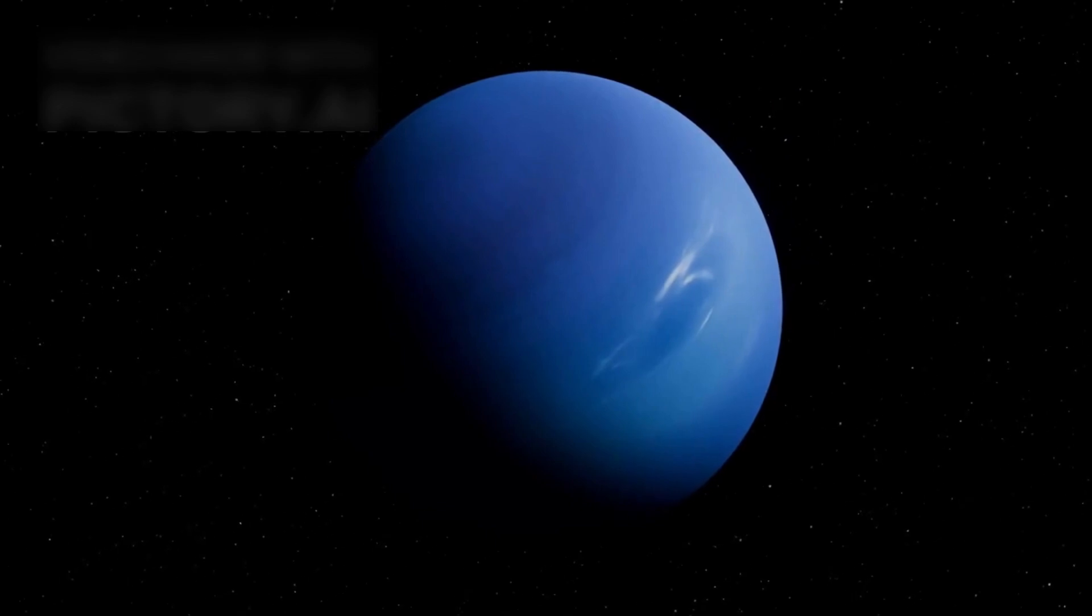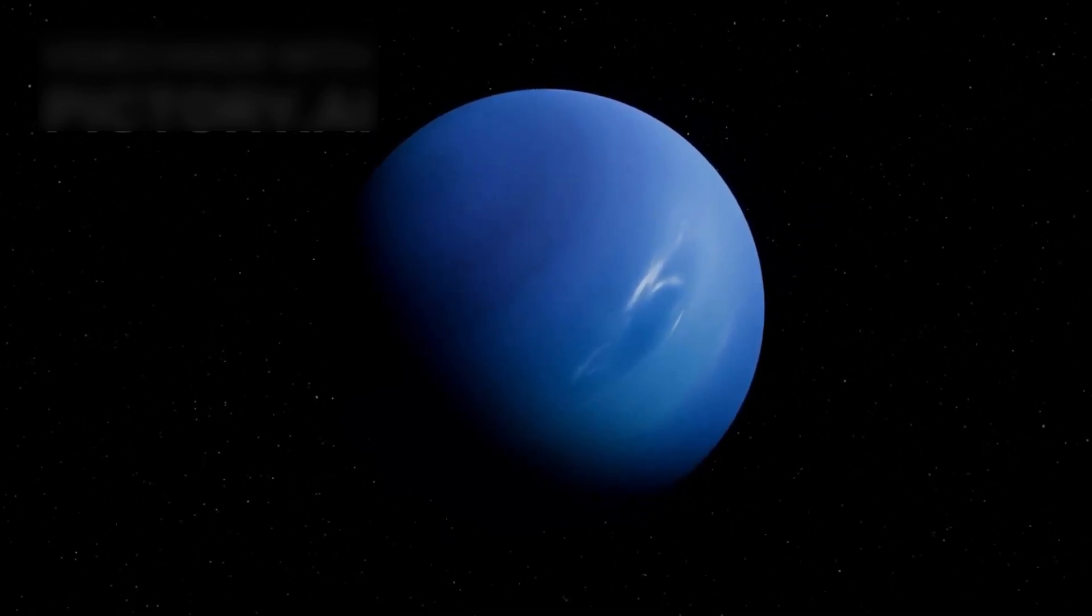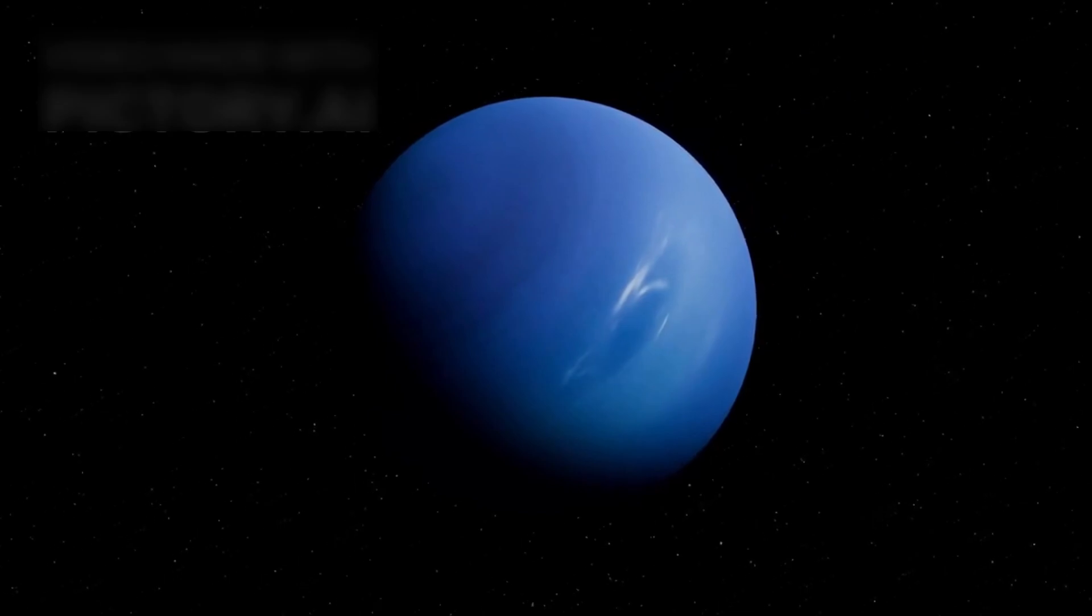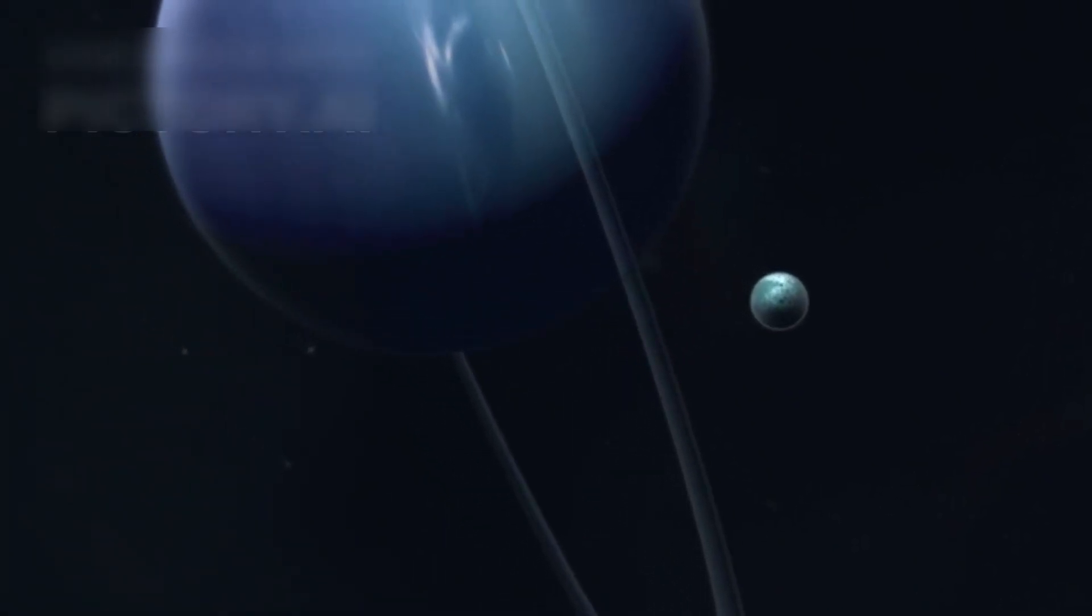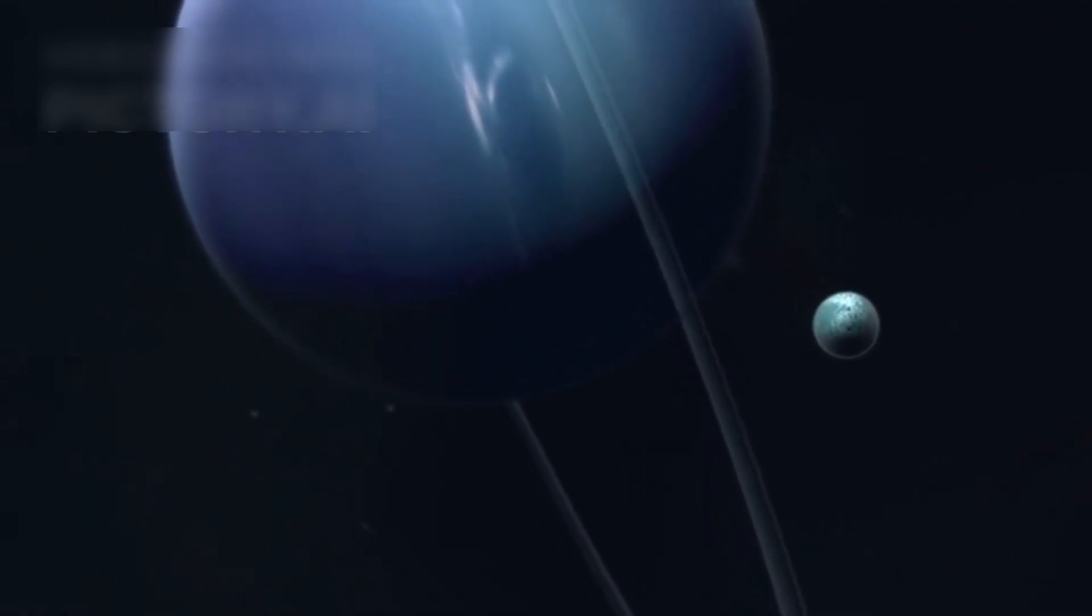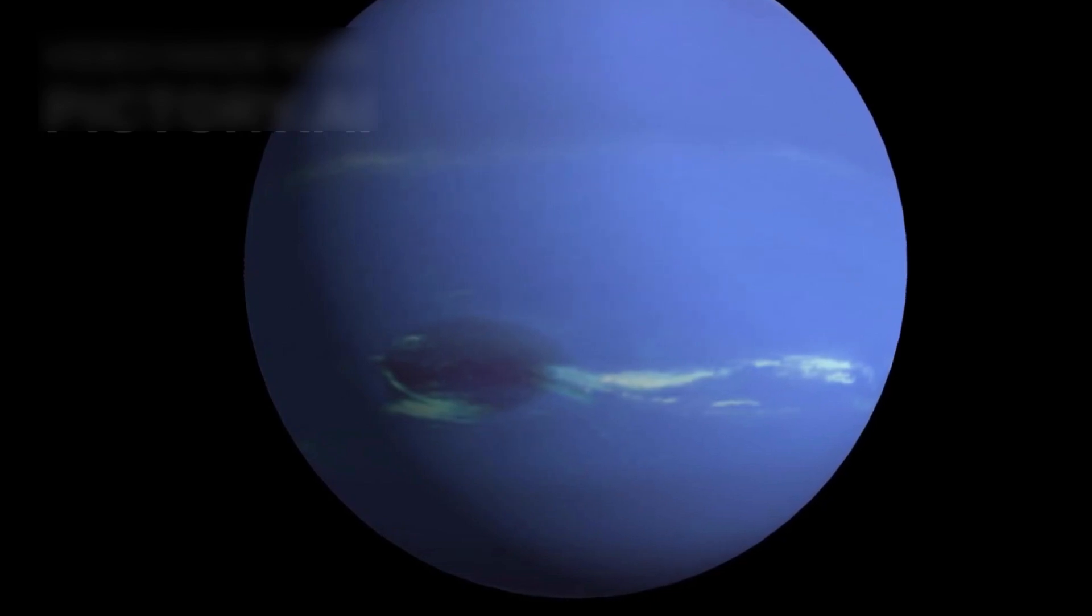And there's more. Evidence is growing that Neptune may contain superionic ices, a rare form of matter that behaves like both a solid and a liquid. These materials, thought to exist only under extreme lab conditions, may be flowing deep inside the planet. If they do, they could help explain Neptune's strange heat patterns and chaotic interior energy flows.